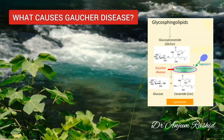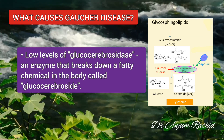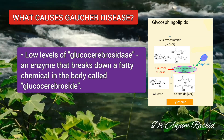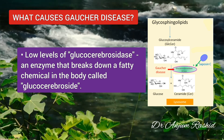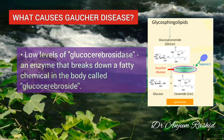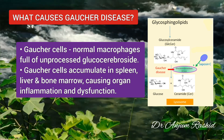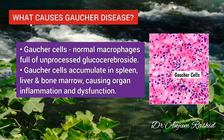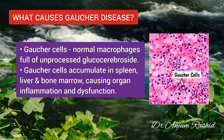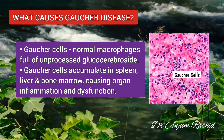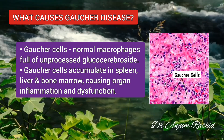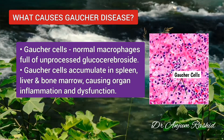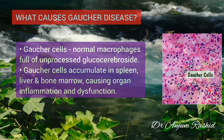What causes Gaucher disease? It is caused by a low level of glucocerebrosidase, an enzyme that breaks down a fatty chemical in the body called glucocerebroside. Gaucher cells are normal scavenger cells called macrophages that become full of unprocessed glucocerebroside. These cells accumulate primarily in the spleen, liver and bone marrow, causing organ inflammation and dysfunction.